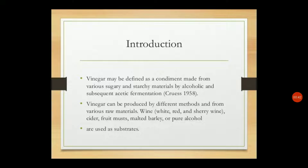In vinegar production, sugars undergo alcoholic fermentation using yeast to produce alcohol. Then, that alcohol is converted into acetic acid using acetic acid bacteria, by acetic acid fermentation. So in the first step, we convert sugars into alcohol or ethanol using yeast by alcoholic fermentation. In the second step, we convert that alcohol into acetic acid using acetic acid bacteria by acetic acid fermentation.